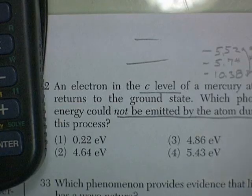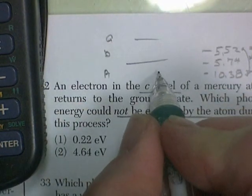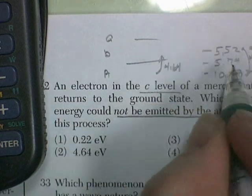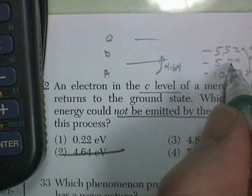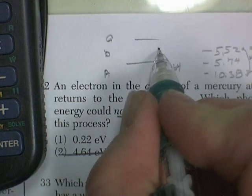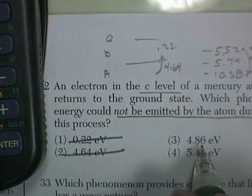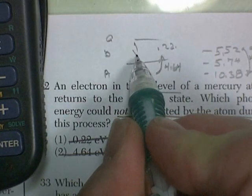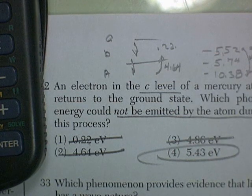Let's look at the choices. Here's my C state, my B state, and my A state. From B to A: 10.38 minus 5.74 gives 4.64 eV — that's one of the choices. From C to B: 5.74 minus 5.52 gives 0.22 eV — there's that one. And if I add them, I get 4.86 eV — that's another choice. The only one that isn't a valid energy level jump is answer 4: 5.43 eV.